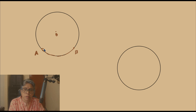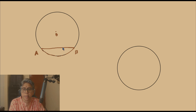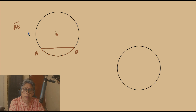Now let us also consider this chord AB. If you join the two points A and B, we get the chord AB — this is a line segment AB which is the chord of the circle.